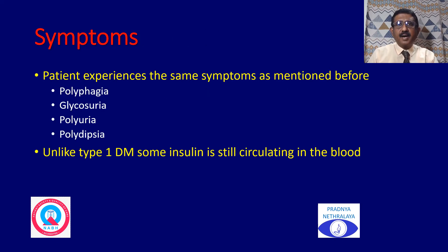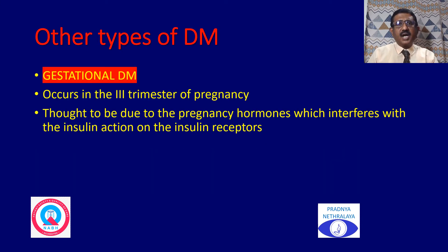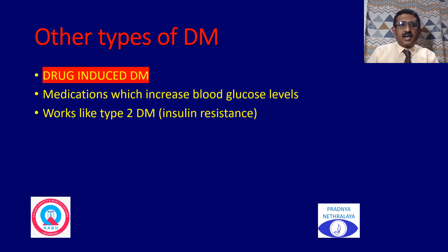The symptoms of type 2 diabetes mellitus are the same as type 1 — polyphagia, glucosuria, polyuria, and polydipsia — unlike type 1, insulin is present in the circulating blood. Other types of diabetes include gestational diabetes, which occurs usually in the third trimester of pregnancy, thought to be due to pregnancy hormones interfering with insulin receptor action. There is also drug-induced diabetes mellitus, where medication increases blood glucose levels and works like type 2 insulin resistance.